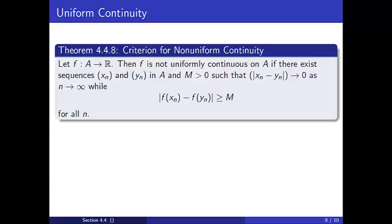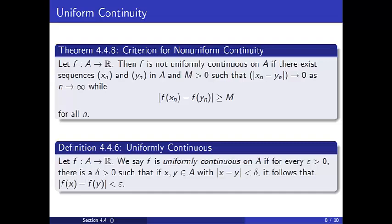Often we will want to show that a function is not uniformly continuous on a set A, and the following criterion provides a means of doing so. Let f be a function from A to R. Then f is not uniformly continuous on A if there exist sequences x_n and y_n in A and a positive real number M such that |x_n − y_n| converges to 0 as n goes to infinity, while the distance between f(x_n) and f(y_n) is always greater than or equal to M for every n. To show that a function is not uniformly continuous, we need to find domain values that are close together but whose corresponding range values are not close together.